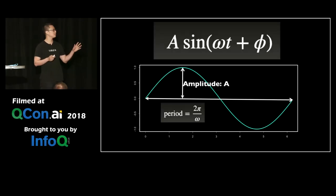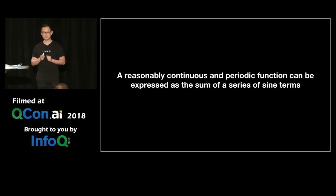Before I go into details, here's the only equation I have, which is a sine function, just as a refresher. Sine function has an amplitude, a phase, and a frequency or period. Why does it matter? Because some great person, Fourier, proved this theorem: a reasonably continuous and periodic function can be expressed as a sum of a number of sine functions. That's the key to the algorithm we use.